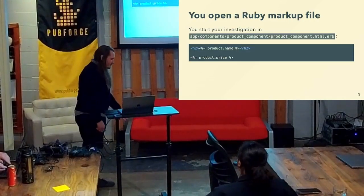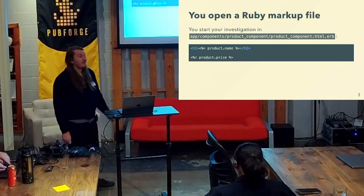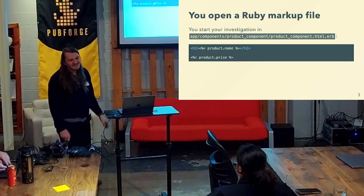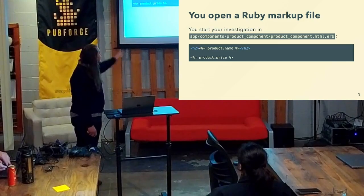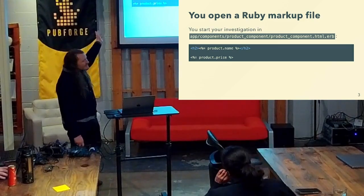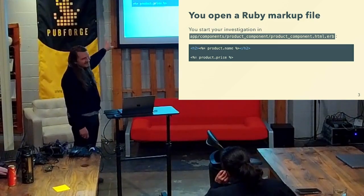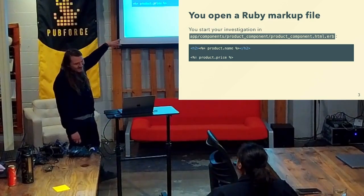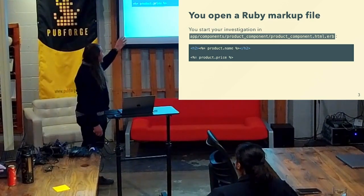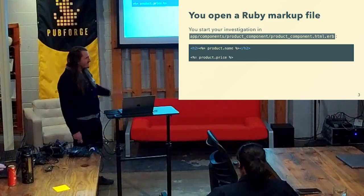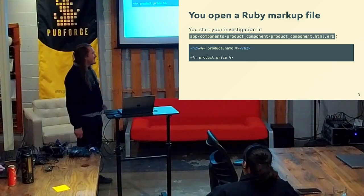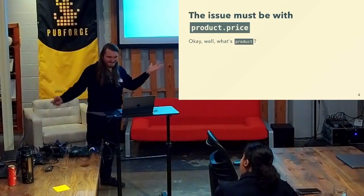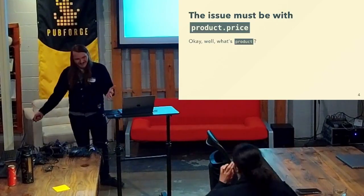So you're in Ruby — maybe you know Ruby really well, maybe you don't. But you see in this file, product_components.html.erb, you see this code. It looks like HTML, and then it's got ERB strings — that's what those are called, ERB strings. And you have an instance variable called product, a method called name — maybe it's an attribute or a method. They're kind of all the same in Ruby. And then you have a price. And you think, you must have a bug in product.price.